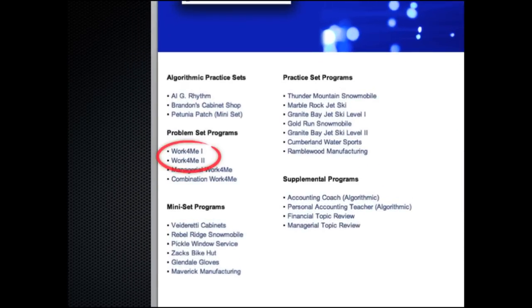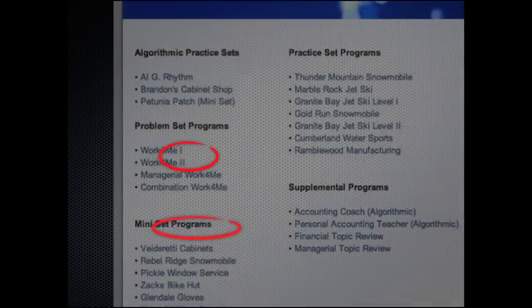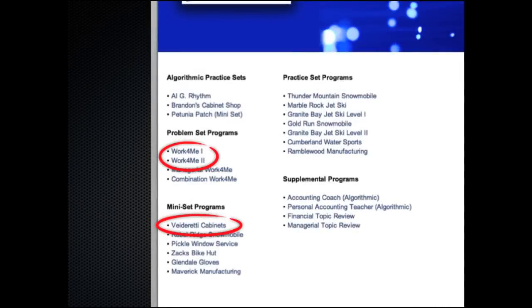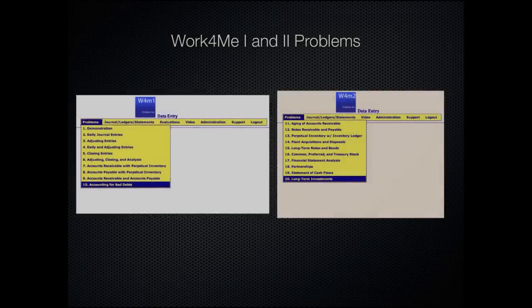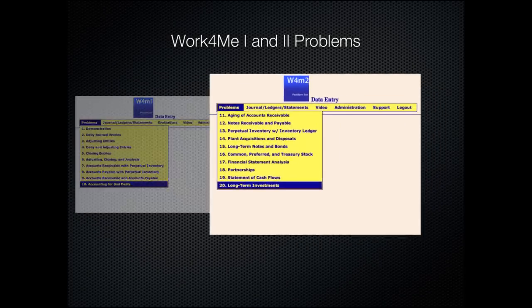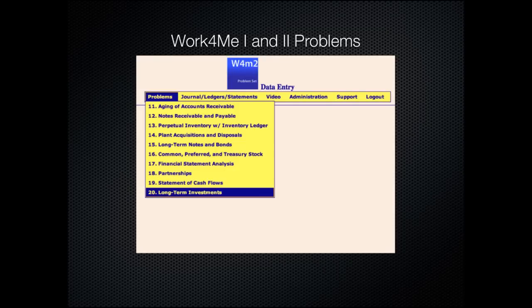This is the login page for one of our most popular products. The product tiles you see identify the content of 20 computerized accounting problems. Each problem is actually a micro practice set with emphasis on a particular accounting subject or process. The Work For Me package comes with three different components. Work For Me 1 has 10 a la carte problems. Work For Me 2 has an additional 10 problems. And Vida Ready Cabinets Incorporated is a mini 3 to 5 hour practice set. Note the progression of topics similar to what you would find in any financial textbook, and the continued progression of financial topics found in Work For Me 2.